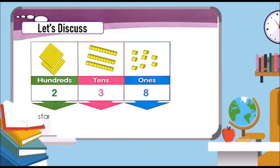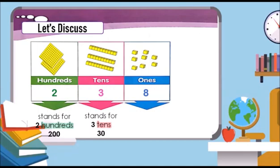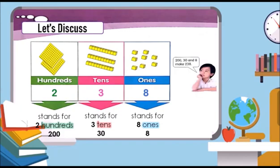The digit 2 stands for two hundreds, or two hundred. The digit 3 stands for three tens, or 30. The digit 8 stands for eight ones, or eight. Two hundred, thirty, and eight make two hundred and thirty-eight.